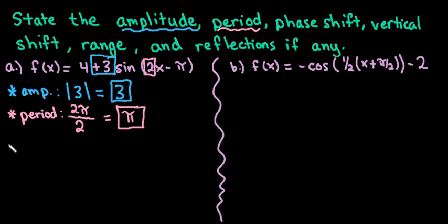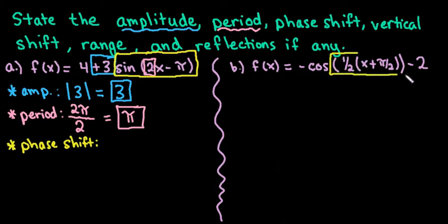Phase shift. Phase shift is the right or left movement, and we have to look at this part right here and make sure that inside is in factored form. So before I do the phase shift, I am going to factor this if it's not already done. If you look at the second one, it's already been factored, so we wouldn't have to worry about this step. But in this one it's not factored, so inside my sine I have to take the 2 out of both terms by undistributing it.